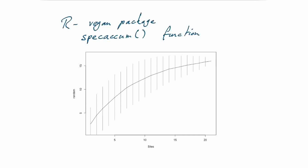This is the species accumulation curve from specaccum applied to our camera trap data. You can see the curve is tailing off quite nicely — it hasn't reached a completely flat asymptote, but it's certainly flattening out. You could extend that curve and say we're pretty close to sampling all of the species in our community. Alternatively, you could fit a curve to those data, work out exactly where the asymptote would be, and estimate the total number of species in the community. If the curve remains steep, you'd know you need to increase your effort to get a good estimate.